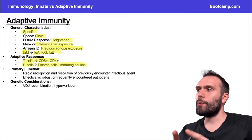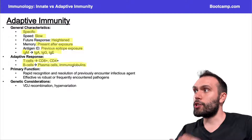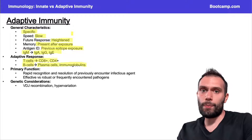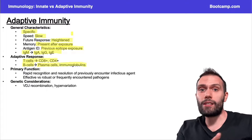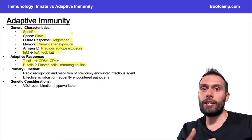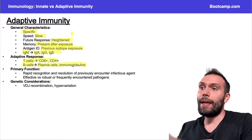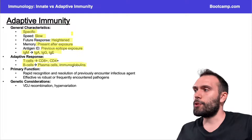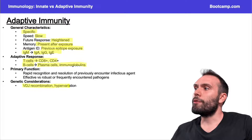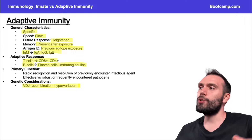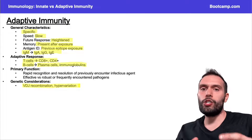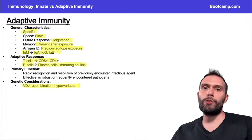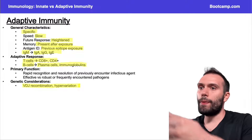The primary function here is going to be recognition and resolution of a previously encountered infectious agent. For example, people exposed to COVID-19 may have developed some memory response to future exposures. But when you introduce something new like a Delta variant, that might change the body's ability to respond, because now maybe it has some protection against that epitope we were using to mount an immune response against.